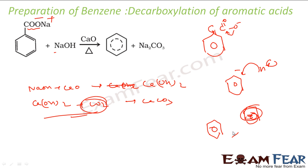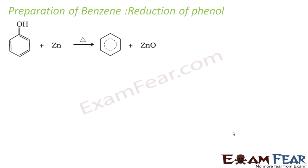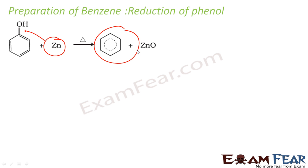This is the decarboxylation of aromatic acid. The next is the reduction of phenol. If you have phenol and you add zinc to it, you get ZnO and you get benzene.